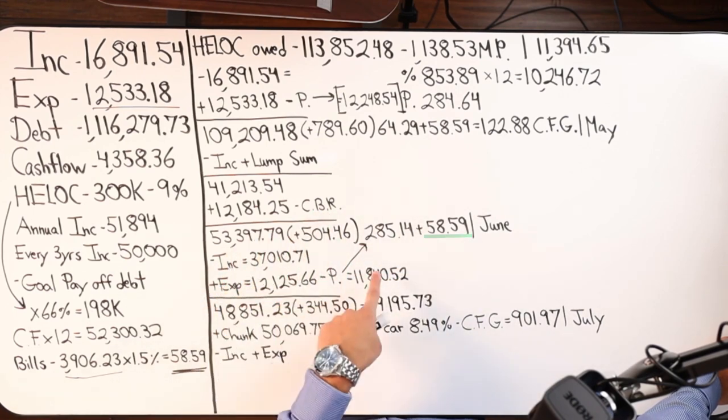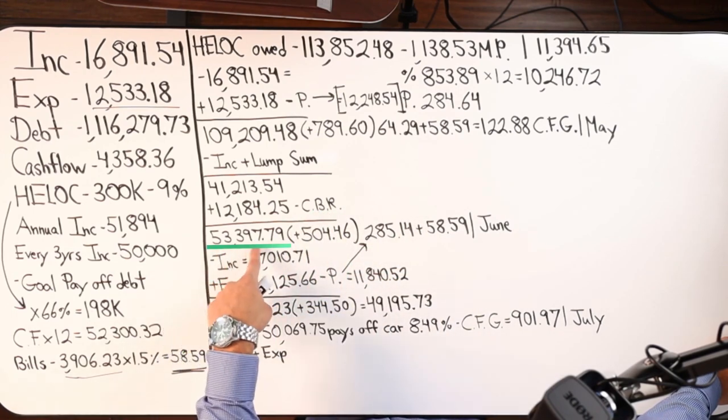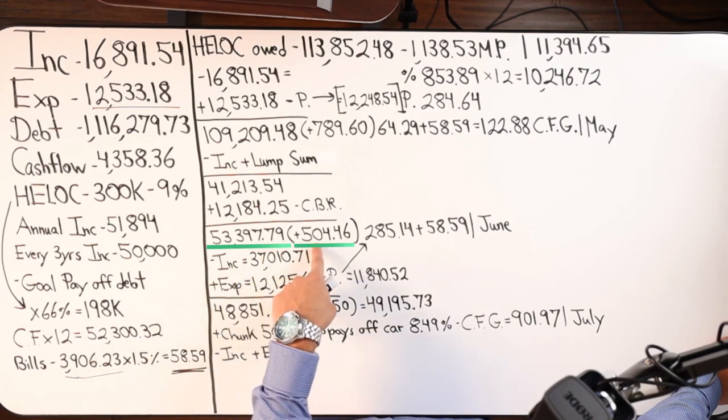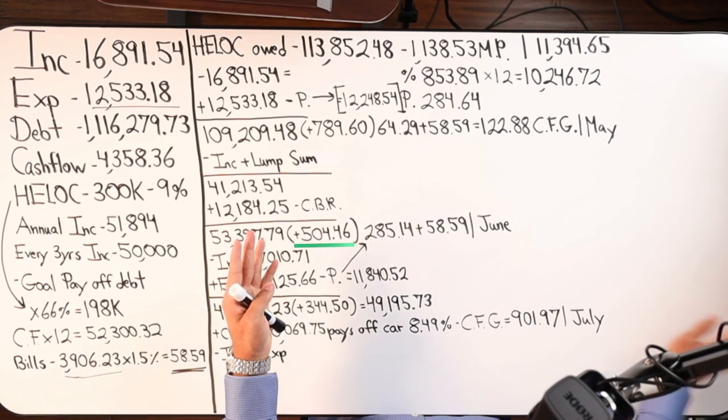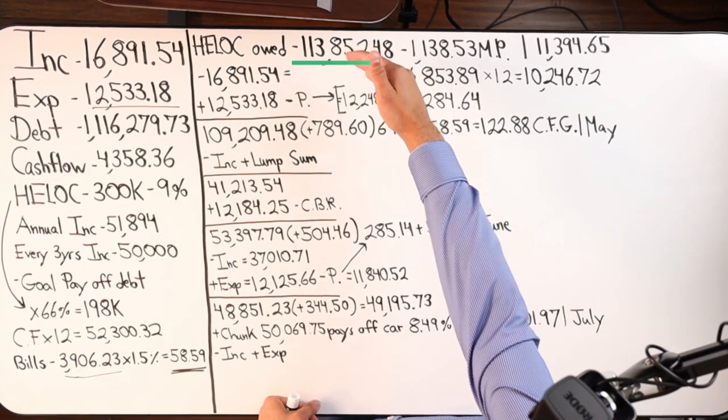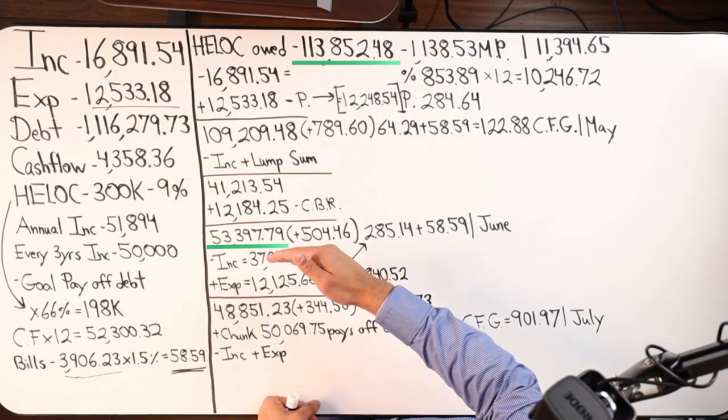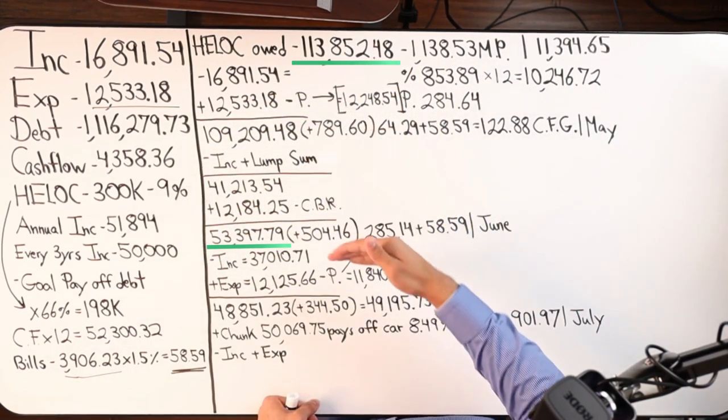So end of June, I should be around here, 53,397.79 plus that number. And then we can decide, okay, we're from 113 all the way down to 53 because of that lump sum and doing velocity banking.